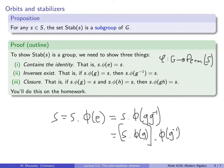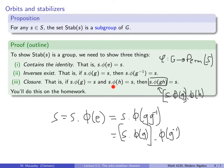For closure: if s dot phi(g) = s and s dot phi(h) = s, consider s dot phi(gh) = s dot phi(g) dot phi(h). Using rules of a group action, that equals s dot phi(h), which equals s. So I pretty much gave giveaway hints, but I still want you to write it up formally.